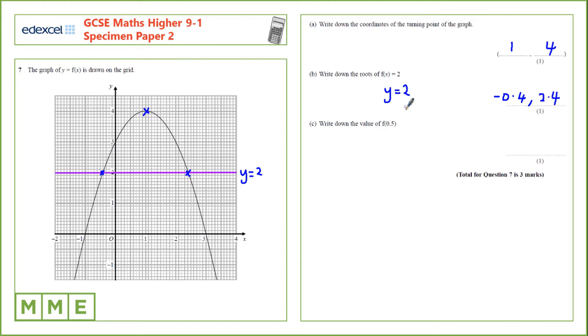Next, we need to write down the value of f of 0.5. 0.5 is here. So, we'll go up to here, across the axis, and it looks like 3.75.